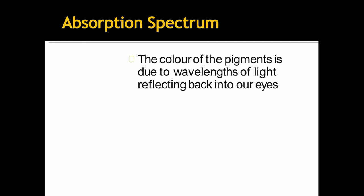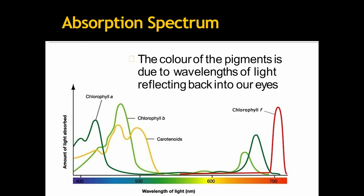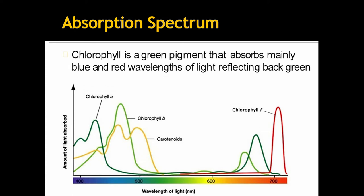The color of the pigments is due to wavelengths of light reflecting back into our eyes. The chlorophyll is a green pigment that absorbs mainly blue and red wavelengths. Look at the chlorophyll A, the high peak is in blue region and in red region. But they reflect back the green color. That is why the leaf looks green because they do not absorb the green color. They reflect it back.